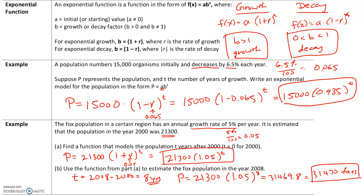Remember these two formulas: a(1 + r)^x for exponential growth, or a(1 − r)^x for exponential decay.